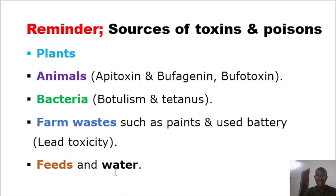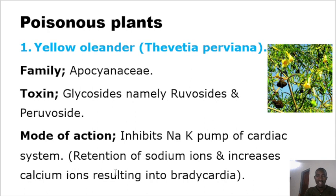Once we know the sources of various toxins and poisons within the farm, we can now go on to talk about the first major source, which is plants. Plants produce various toxins and constitute a lot of the toxicity and poisoning around the farm. We need to know the plant, then the toxin within the plant, then the mode of action.